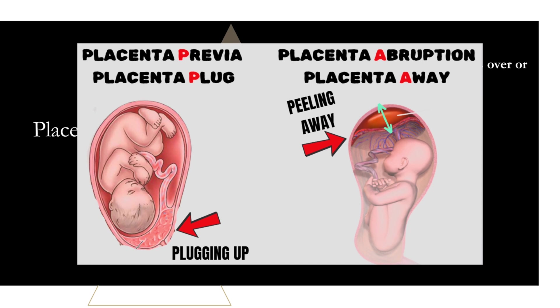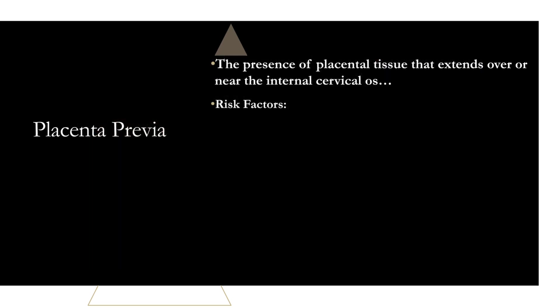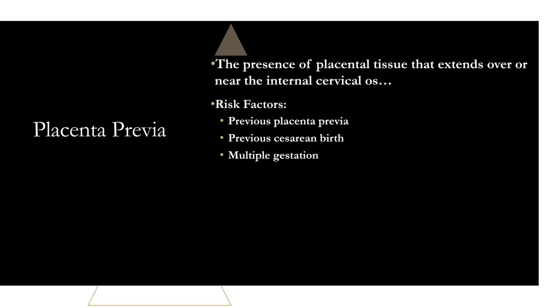For risk factors of placenta previa, there are three main ones to focus on: previous placenta previa, previous cesarean birth, and multiple gestation. One study found placenta previa was 40% higher among twin births than singleton births. Other risk factors include increasing maternal age, smoking, cocaine use, and male fetus — but focus on those three main ones, as risk factors are not the highest yield thing to know.